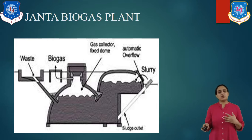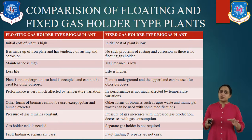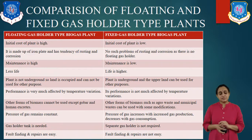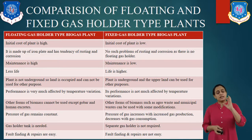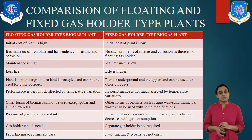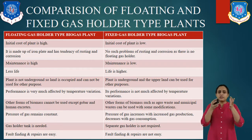Let us compare floating and fixed gas holder type plants. For the floating gas holder: initial cost is high; it is generally made of iron and has a tendency for rusting and corrosion; maintenance is high and life is less. The plant is not underground, so land is occupied and cannot be used for other purposes. Performance is very much affected by temperature. However, pressure of the gas remains constant, and fault finding and repair is easy because of the floating type drum.